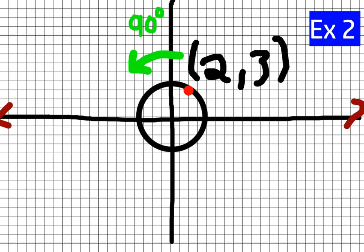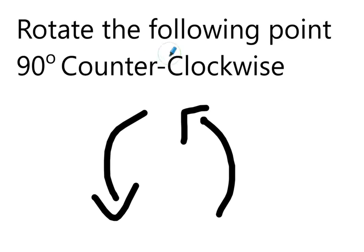Alright, for our next example, we're going to be rotating this point counterclockwise around the origin. So counterclockwise means it goes this way. Here's the directions. Rotate the following point counterclockwise. I'll go ahead and just say around the origin because that's what the directions are going to tell you to do. So we're going to rotate it about the origin.